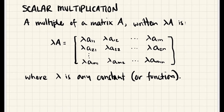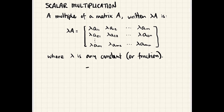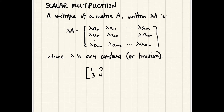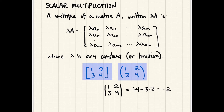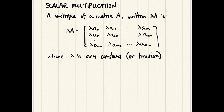A quick word about notation: you can use brackets around a matrix, or you can also use parentheses. What you are not allowed to use are vertical lines, because this specifically means the determinant of the matrix — so that would evaluate to something like 1 times 4 minus 3 times 2, which is negative 2. These two notations are matrices; vertical lines mean the determinant. Your book uses parentheses, and they're a little easier to write, so I'm going to use parentheses for the remainder of our use of matrices.